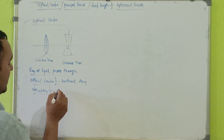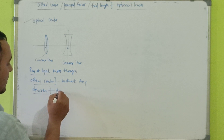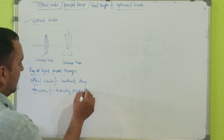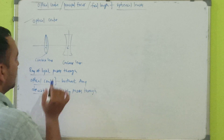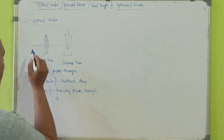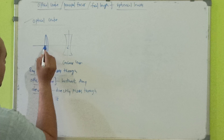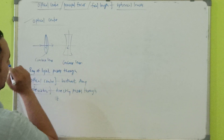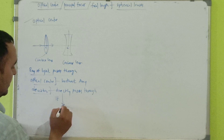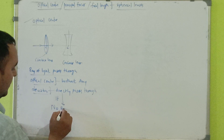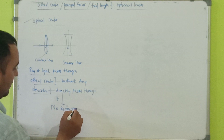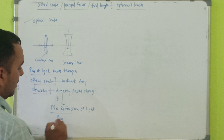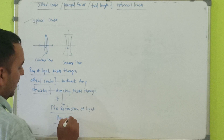it directly passes through it — no deviation will take place. So like this, a ray is passing through the optical center without any deviation; it directly passes through. No refraction of the light ray will take place.